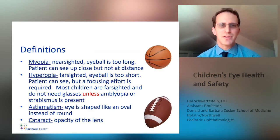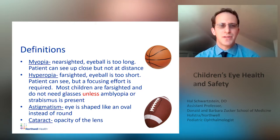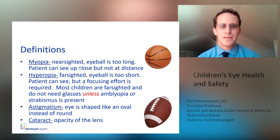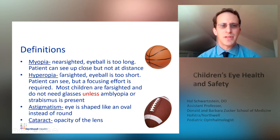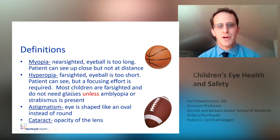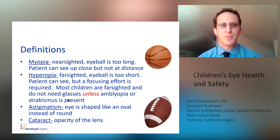Some definitions for words that'll come up in the presentation. There's myopia, which is nearsightedness. This happens when the eyeball is too long. Patients can see up close, but not at distance. Hyperopia is farsightedness — this is when the eyeball is too short. Patients can see, but a focusing effort is required. Most children are farsighted and do not need glasses unless they have amblyopia or eye misalignment, which is called strabismus.